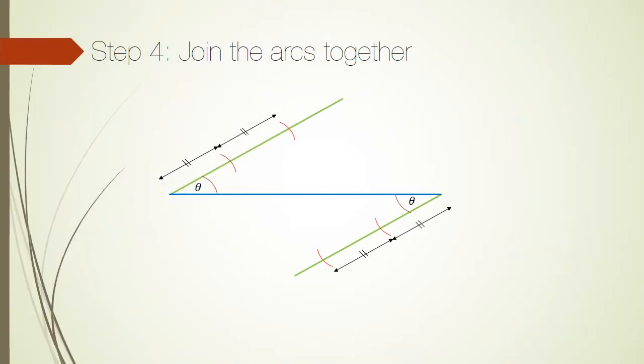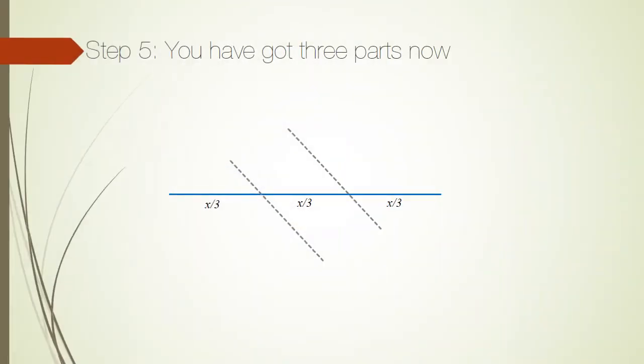Step 4: Join the arcs together. You have now got the trisection of the line.